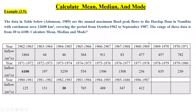In this video, I'm going to show you how we can calculate mean, median, and mode in a frequency table. We have this example: the data in the table below are the annual maximum flood peak flows to Hardap Dam in Namibia, with a catchment area of 12,600 square kilometers, covering the period from October 1962 to September 1987.